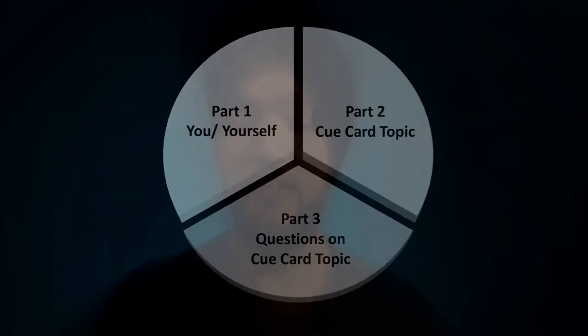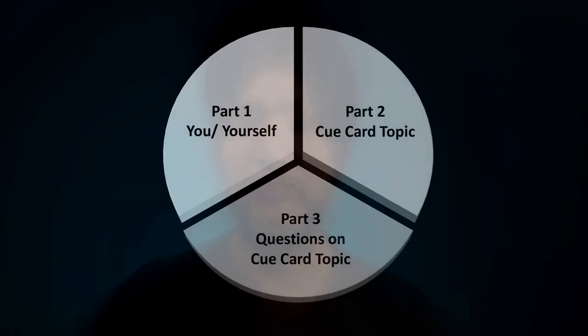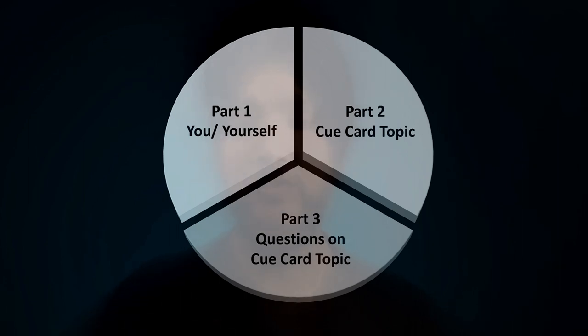Next, the structure of IELTS speaking includes three sections. The first section has three to four questions which are about you. The second section is a cue card section where they give you a topic and you have to speak on it for at least a minute or two. The third section is a follow-up set of questions related to the second cue card, where you have to give extended answers which should be relatively longer versus what you gave in part one.